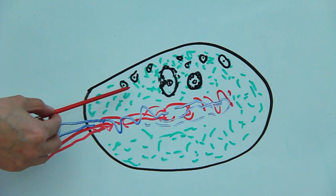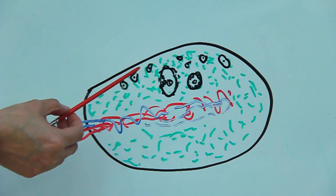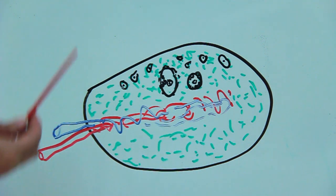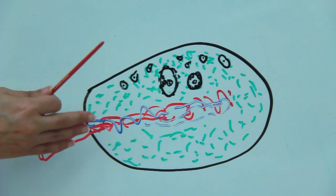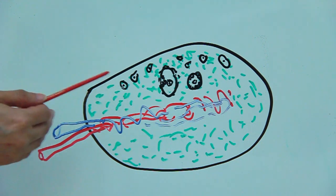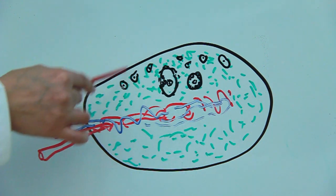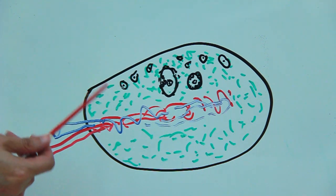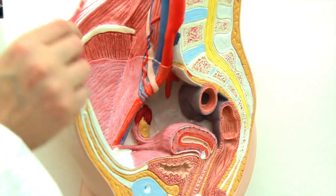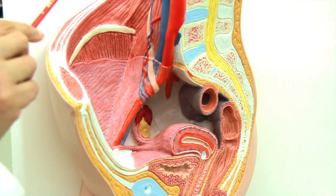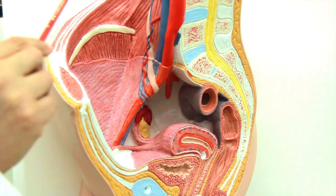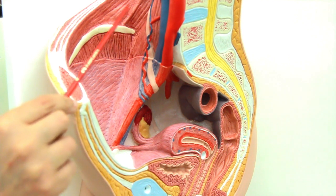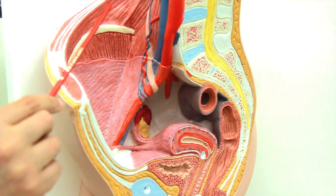The cortex of the ovary is laden with ovarian follicles embedded in the interstitium of the cortex. As mentioned, at the time of puberty, once gonadotropin release starts from the pituitary gland, these follicles show growth. Because the ovaries originally developed in the lumbar region, they received blood supply through the abdominal aorta. The ovarian artery — a direct branch of the abdominal aorta — supplies the ovaries in females.